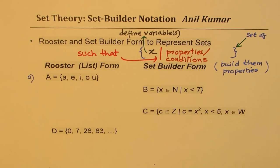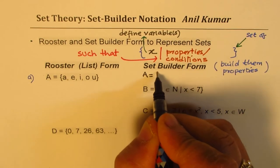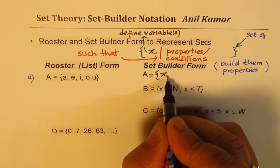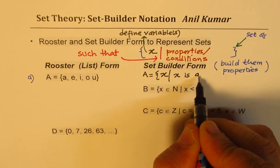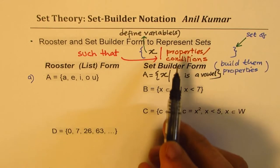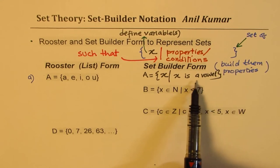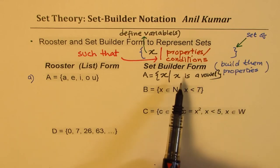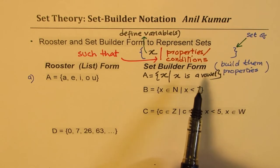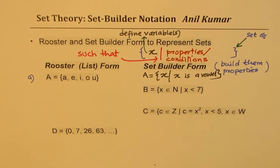For set A = {a, e, i, o, u}, in set builder form I write: A = {x | x is a vowel}. The condition 'x is a vowel' specifies that there are only five vowels, and from that condition you can build the set without listing a, e, i, o, u explicitly. I hope this point is very clear.